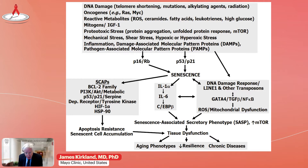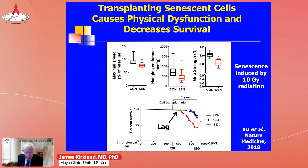Senescent cells are very resistant to dying. In fact, they're metabolically very active. Most, if not all, senescent cells can develop something called a senescence-associated secretory phenotype — I'm just going to call it SASP for short. About 30 to 70 percent of senescent cells have a tissue-destructive SASP. The other 30 to 70 percent have a SASP which can promote tissue growth and wound healing. The SASP is what appears to contribute to tissue dysfunction if there's an accumulation of persistent senescent cells.